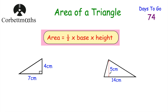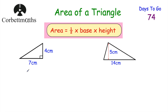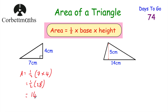Here we've got two triangles — can you find their areas? For the first triangle, the area equals half the base times the height: half of 7 multiplied by 4. 7 times 4 is 28, and half of 28 is 14. So the area of that triangle is 14 centimetres squared. We could also have done half of 4 is 2, then 2 times 7 equals 14, or half of 7 is 3.5, then 3.5 times 4 equals 14.